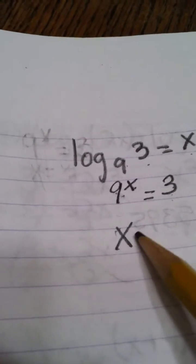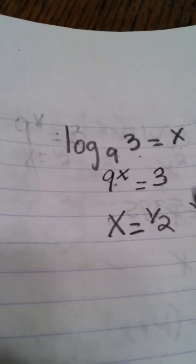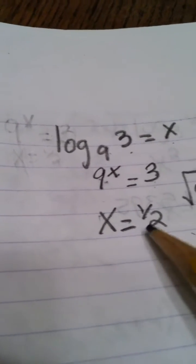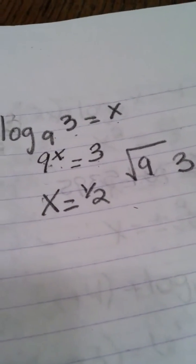So x would equal one half because in order to square root it, 9 to the one half, you get 3. So the exponent has to be one half in order for the 9 to be square rooted.